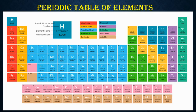Scientists have discovered 118 kinds of atoms, which we call elements. We can find them laid out on a chart called the periodic table. Here you can observe all 118 different kinds of elements.